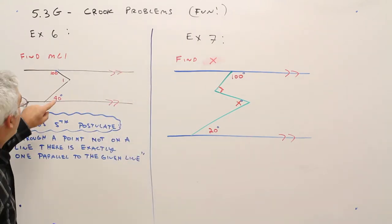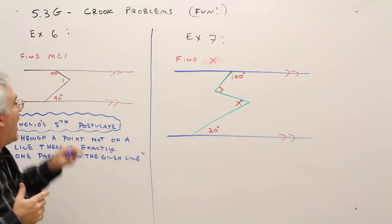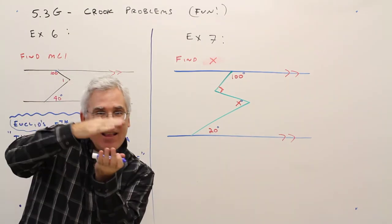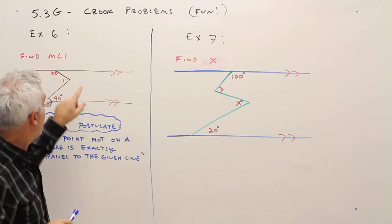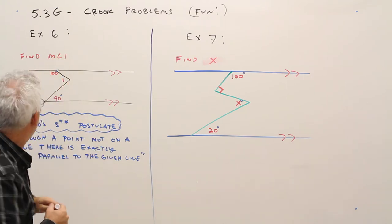Alright, so find the measure of angle one. And let's also agree that when we give an angle, it's inside that little crook there. So it's not this larger angle, it's that one right there.